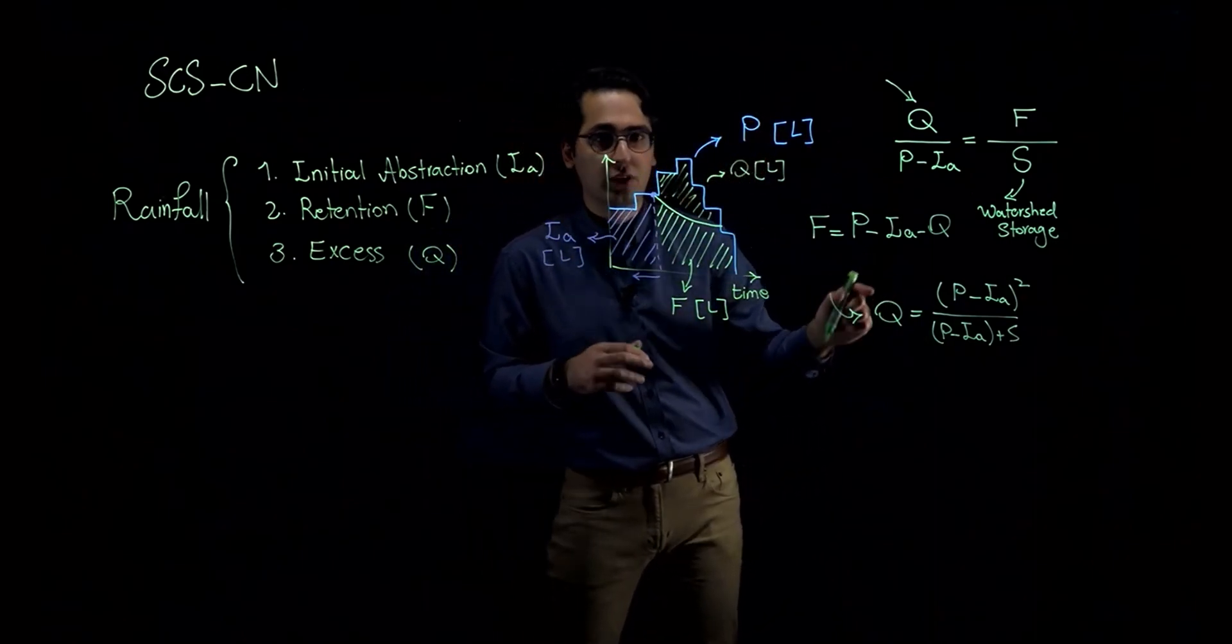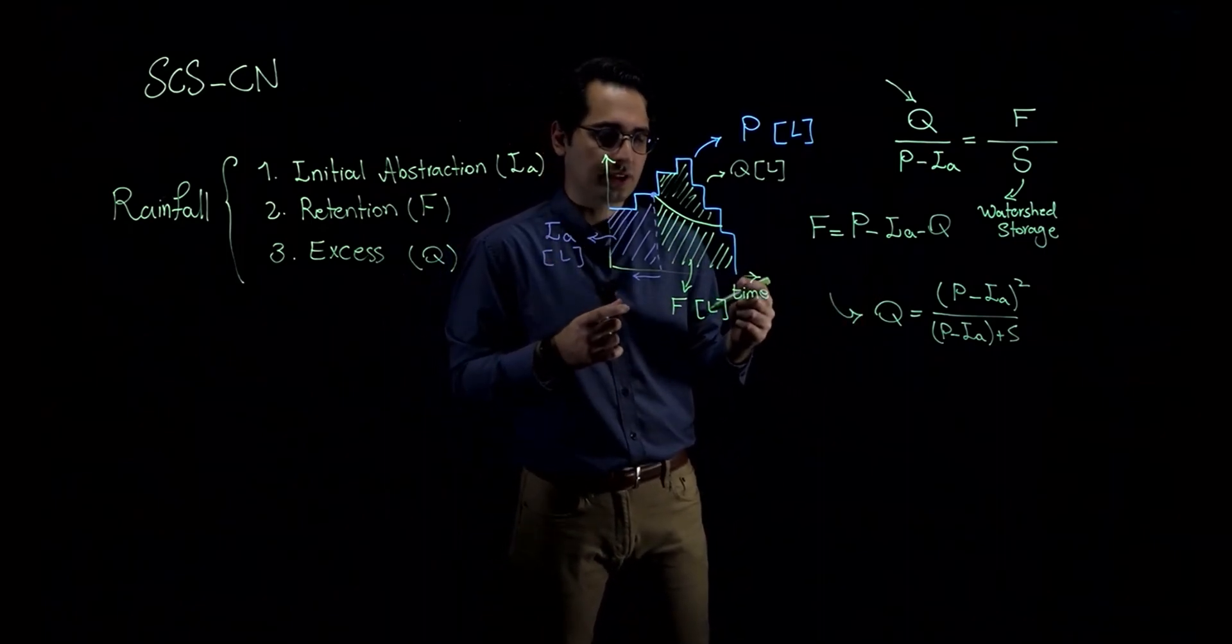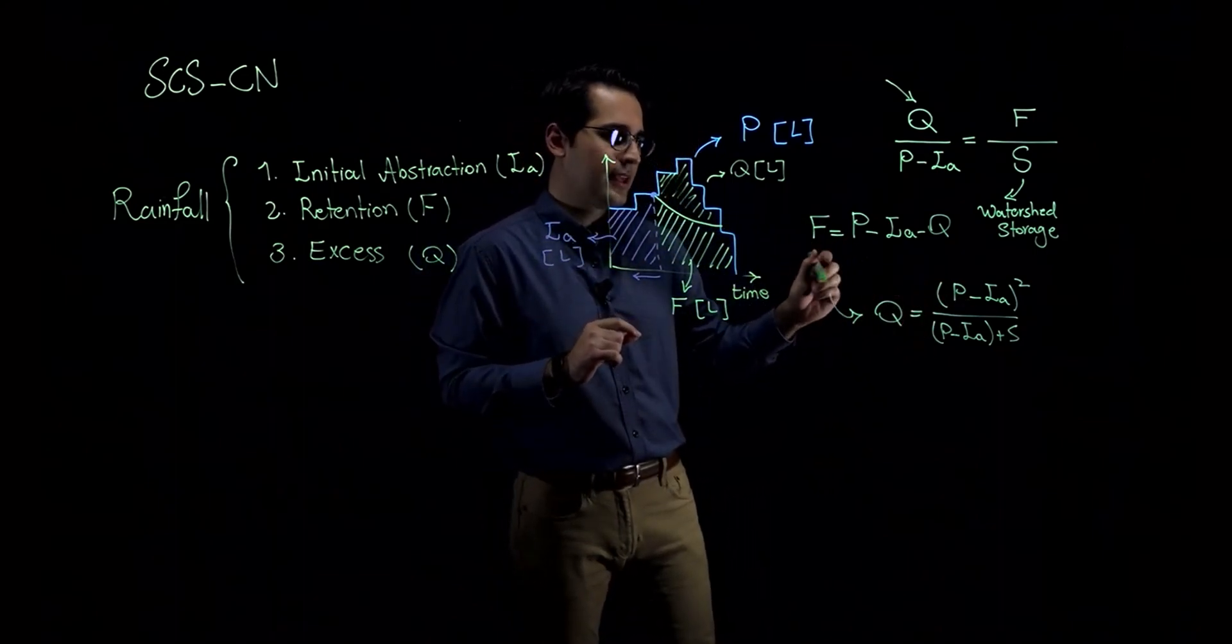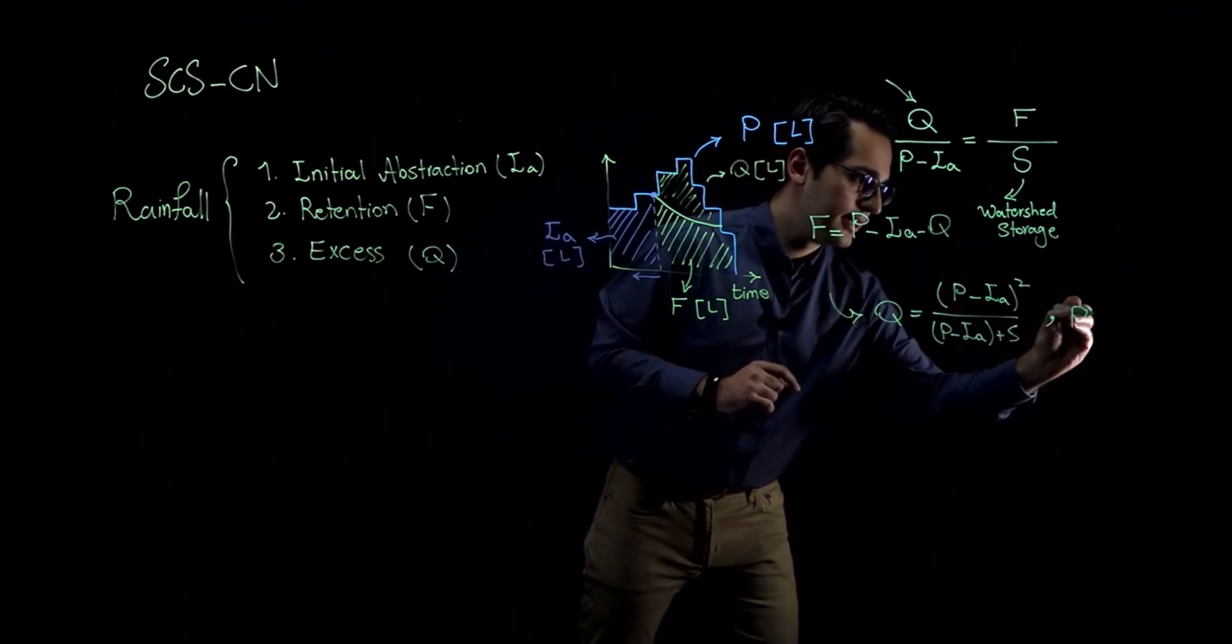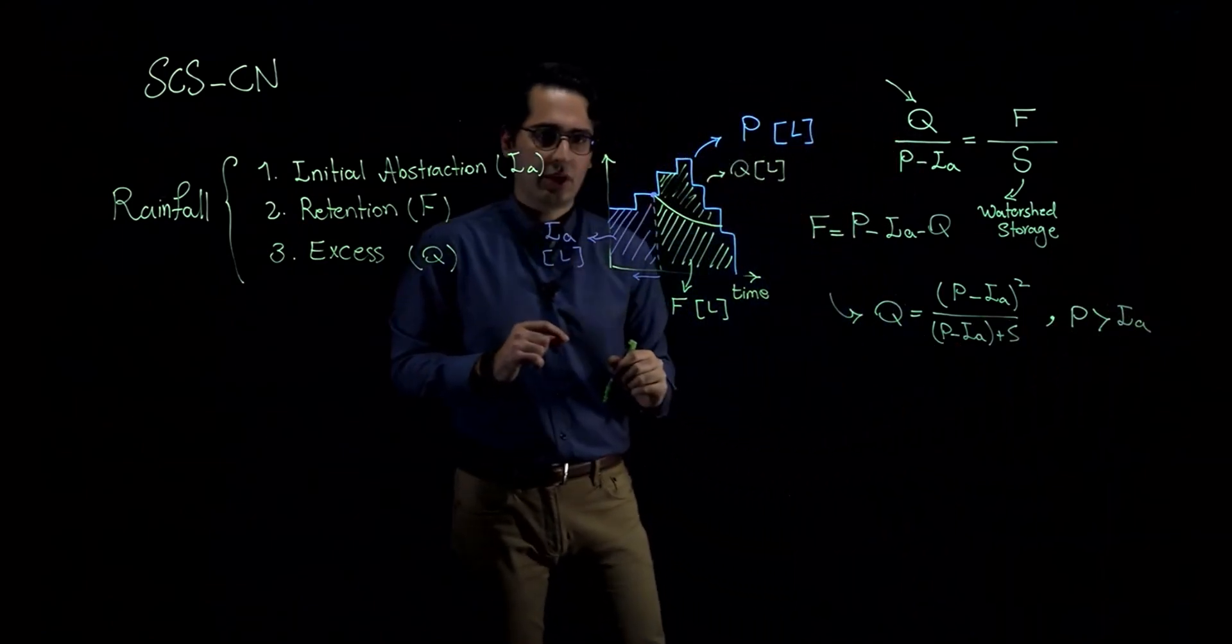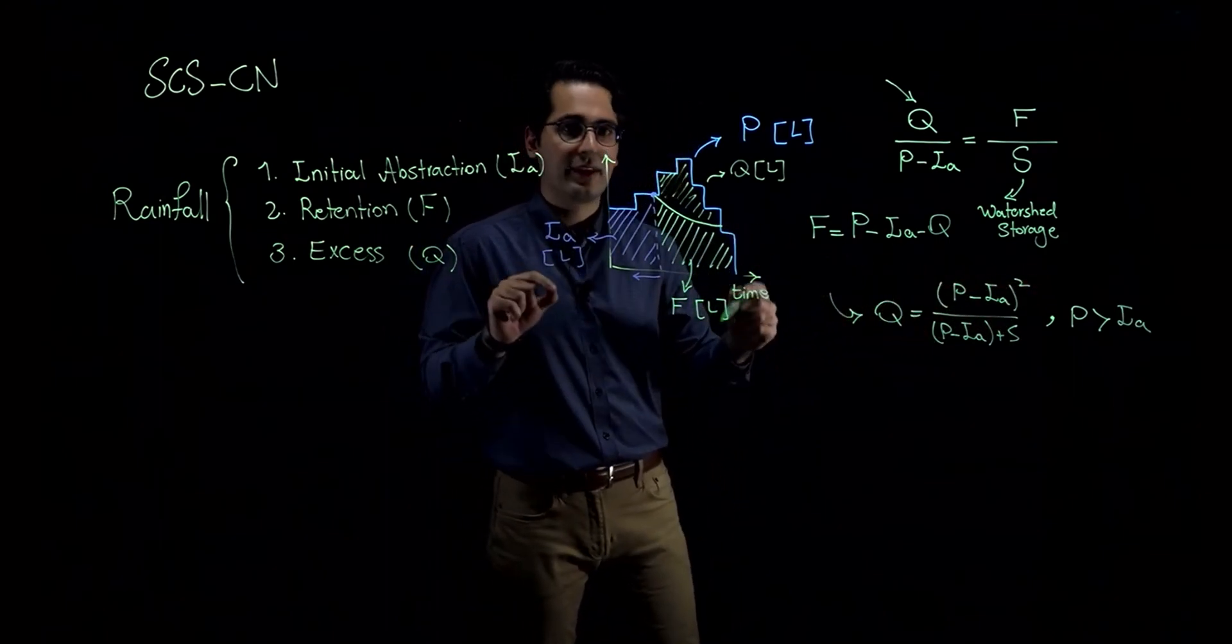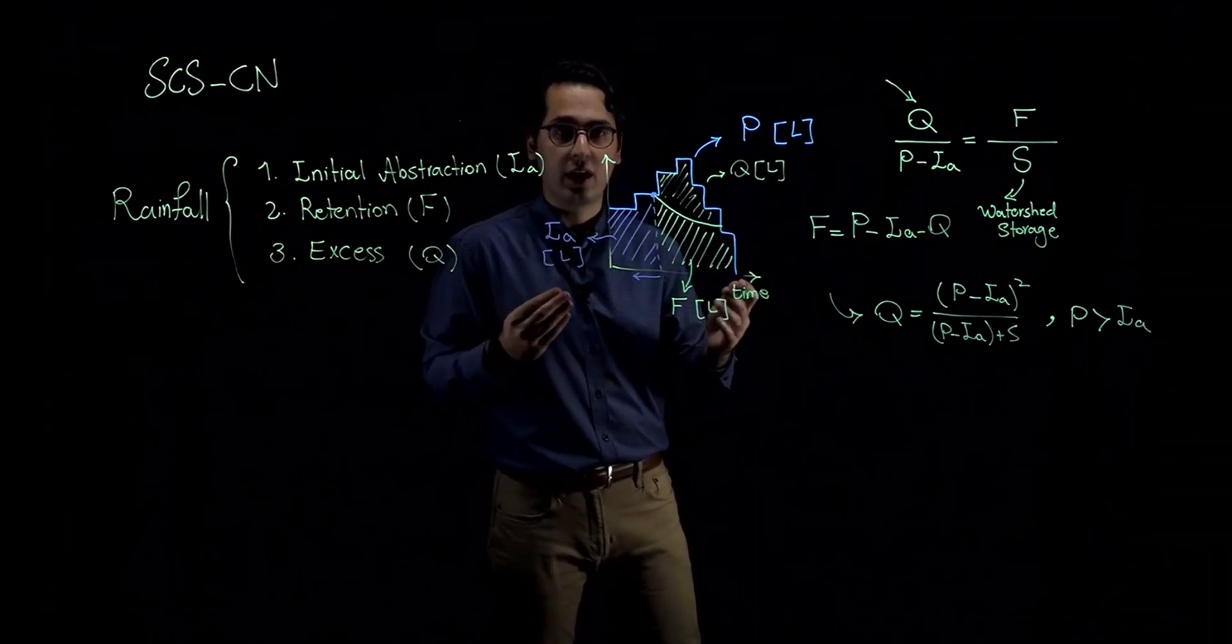Now, this is SCS curve number equation to calculate rainfall excess, the amount of rainfall excess. But there is one important point. This equation is only true if the amount of precipitation is larger than initial abstraction. So if the amount of precipitation is less than initial abstraction, then the amount of excess rainfall or runoff is going to be zero.